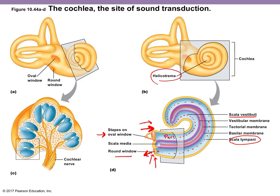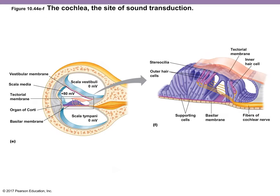The third duct inside the cochlea is sandwiched between the vestibular duct and the tympanic duct — both filled with perilymph. This third duct is called the cochlear duct, or scala media. It's filled with a different substance called endolymph, which differs from perilymph in ion concentration. Notably, potassium ions are very high in endolymph.